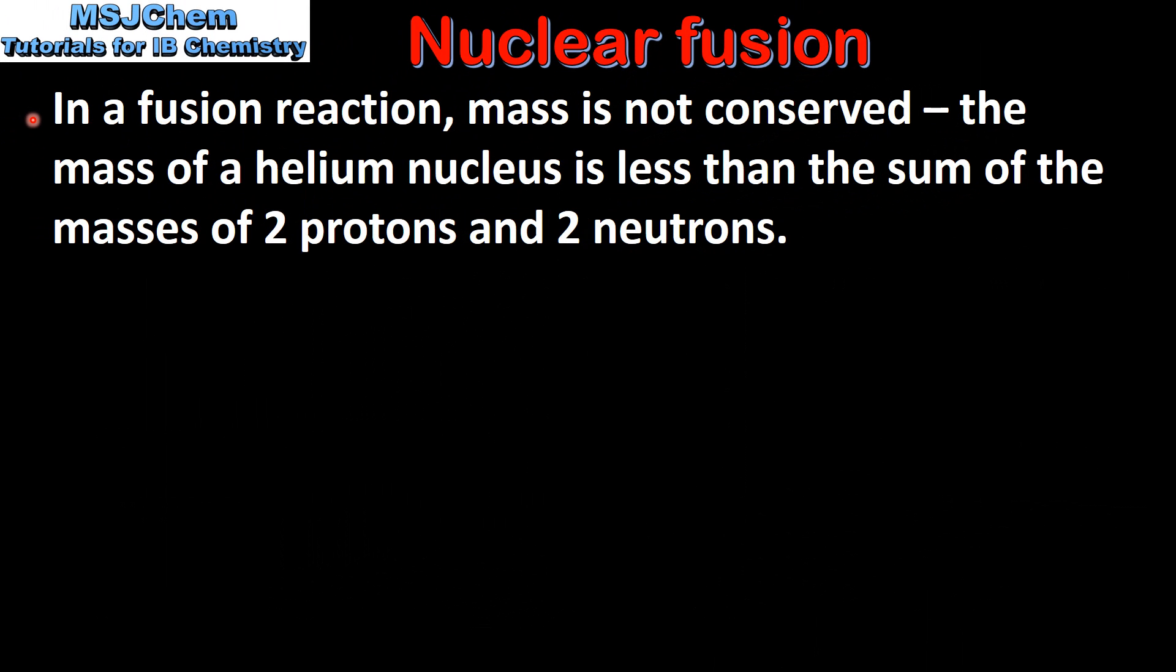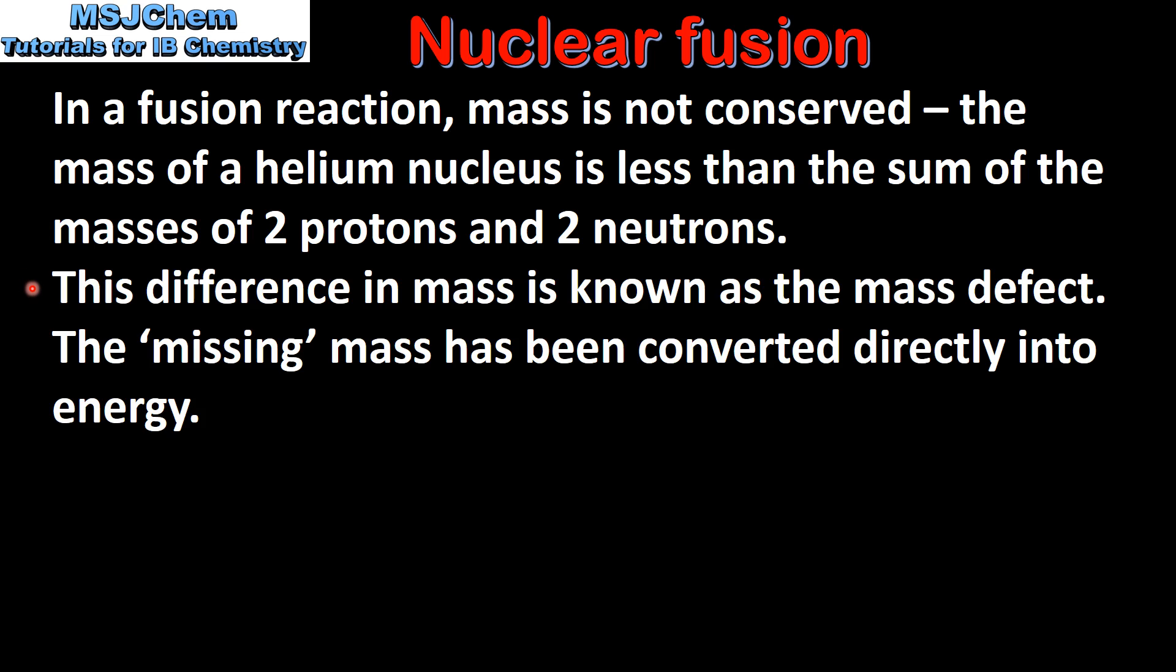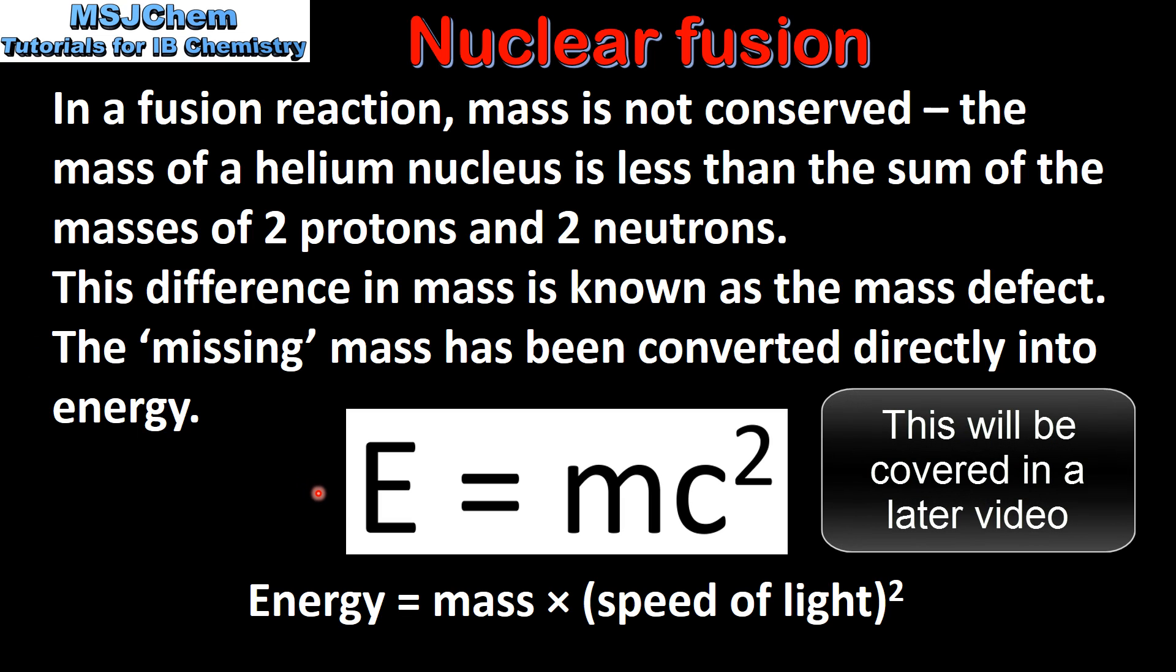Unlike in a chemical reaction, in a fusion reaction mass is not conserved. For example, the mass of a helium nucleus is less than the sum of the masses of two protons and two neutrons. This difference in mass is known as the mass defect. The missing mass has been converted directly into energy. Using the equation E equals mc squared we can calculate the energy released in a fusion reaction.